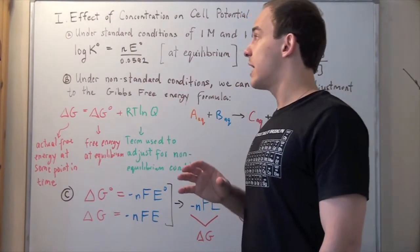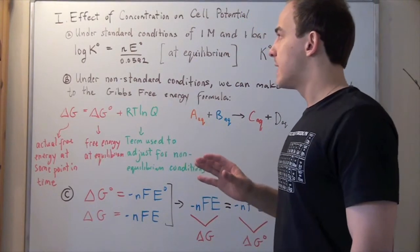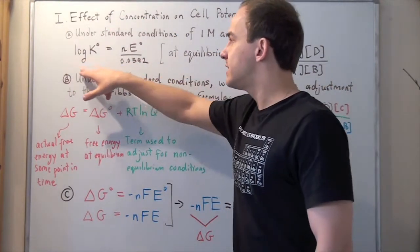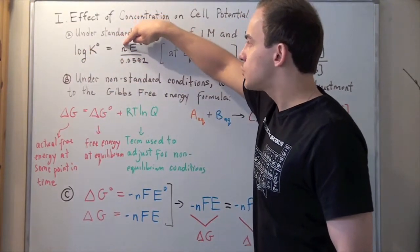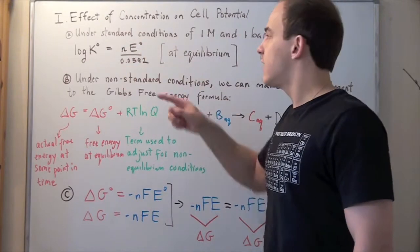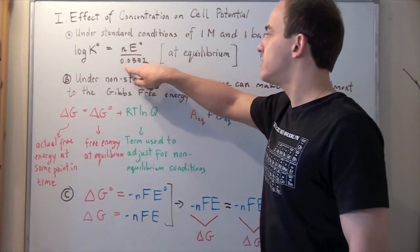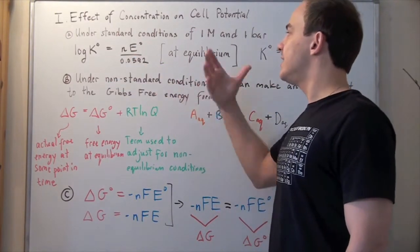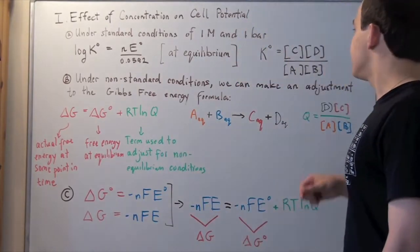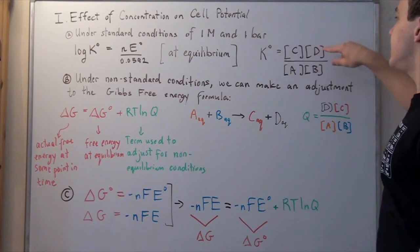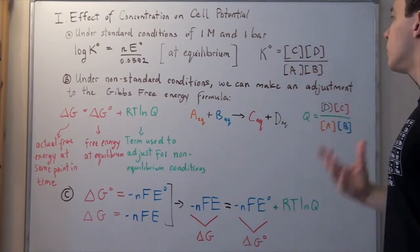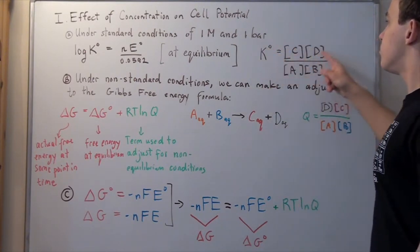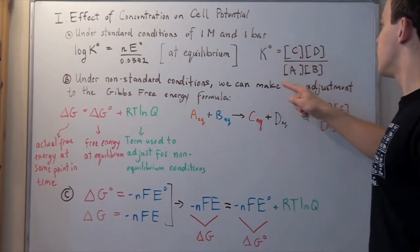In a previous lecture, we saw that the relationship between the equilibrium constant K under standard conditions is the following: log base 10 of K equals the number of moles of electrons n times the standard cell voltage E°, divided by 0.0592. This applies when our reaction is at equilibrium. If our reaction has reactants A and B and products C and D, all in aqueous state, then the equilibrium constant expression K equals the ratio of the concentration of products divided by the concentration of reactants.